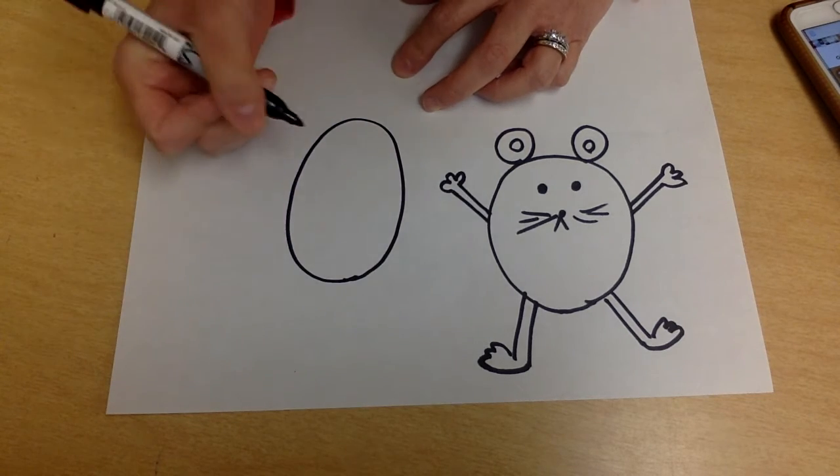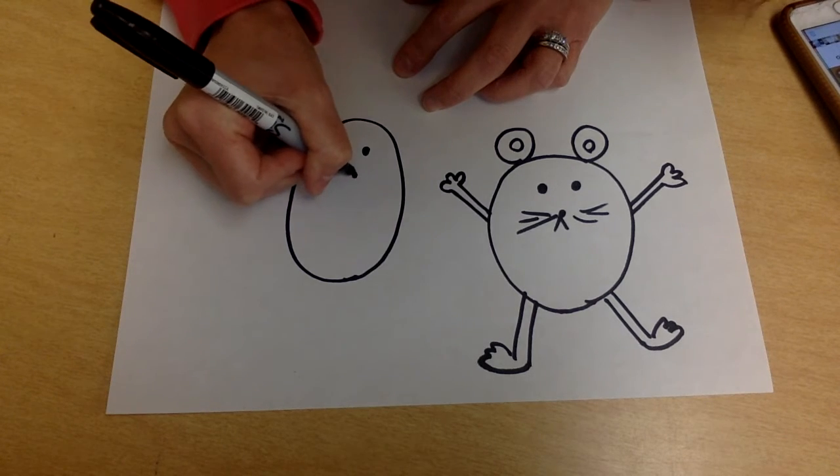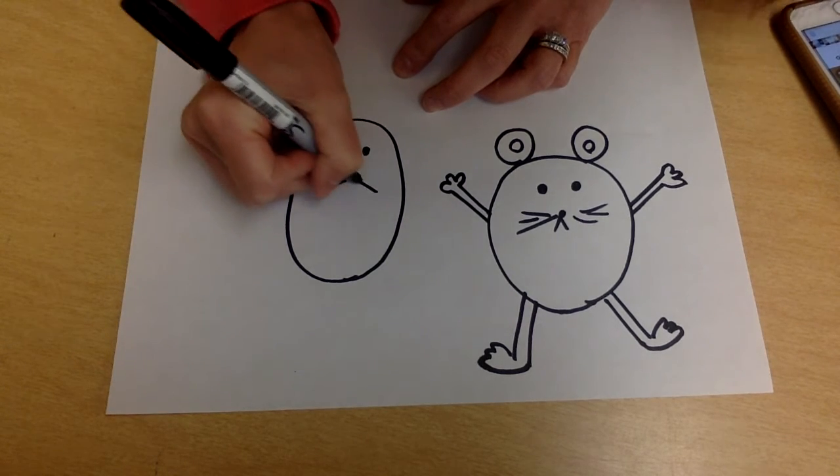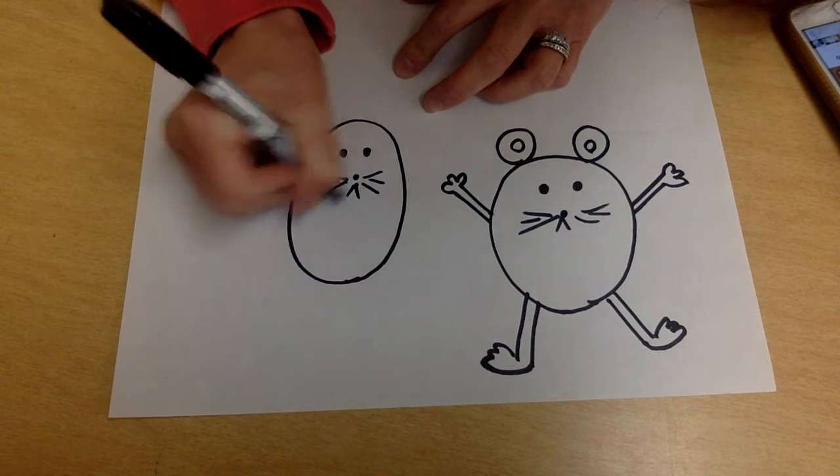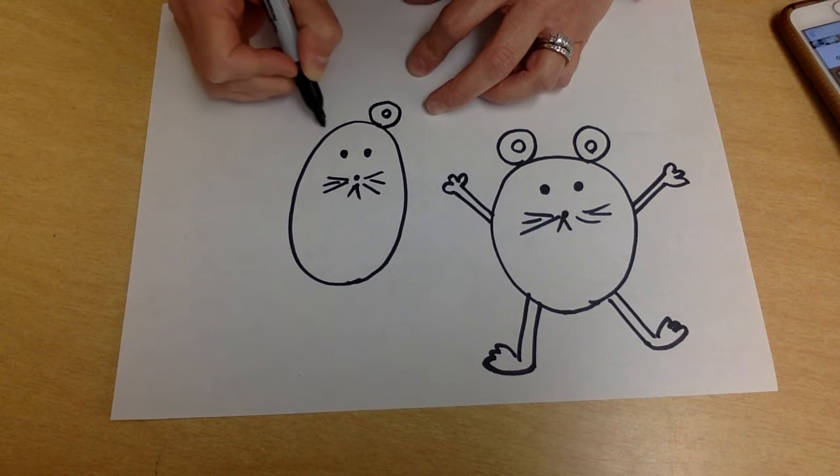Okay, circle or oval, dots, dot for the nose. All right, I'm going a little faster now because we're doing the same thing as before.